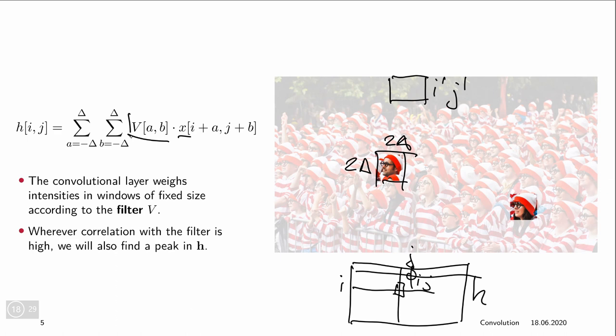Then in order to compute for example this point here, this is i prime, j prime, we would assume to get a small value if we have a matrix V that looks for a feature set similar to Waldo.